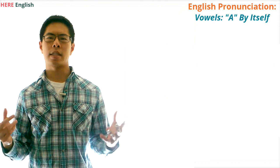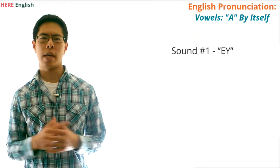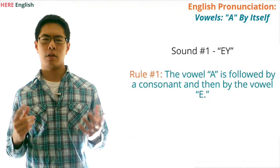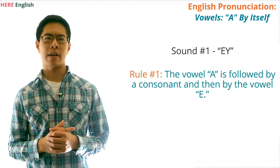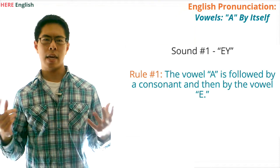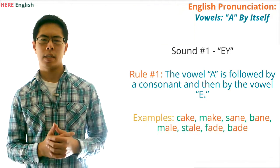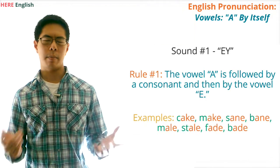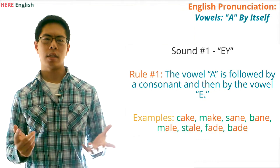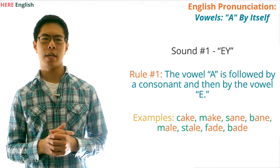First, the letter A can sound like A in a word. Here are three rules for when the vowel A will sound like A. Rule number one: usually, when the vowel A is followed by a consonant and then by the vowel E, it will sound like A. Examples of words with this rule are cake, make, sane, bane, male, stale, fade, and bade. As you can see, in each of these words, the vowel A is followed by a consonant and then by the letter E.